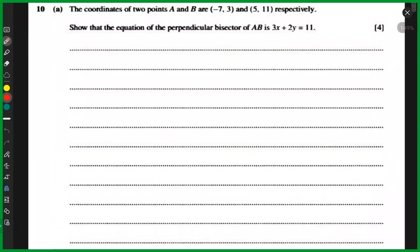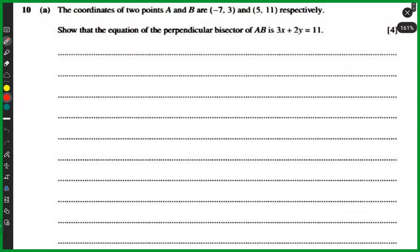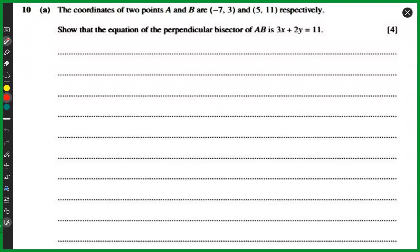I'm pretty sure all of you would be able to do this because we have just done a question of similar type. The line segment is AB, the coordinates of A are given, and we need to find the equation of the perpendicular bisector. The perpendicular bisector is a line that bisects the line segment AB perpendicularly.